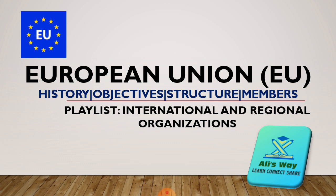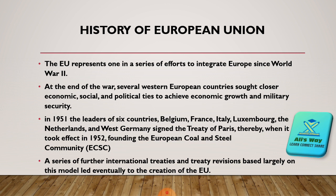First of all, we will discuss its history. The European Union, this international organization, has a main objective — the prime objective of integration of Europe, especially since World War II. After the destruction of World War II, this organization was slowly and gradually forming in Europe to connect the European nations. At the end of the war, several Western European countries sought closer economic, social, and political ties to achieve economic growth and military security.